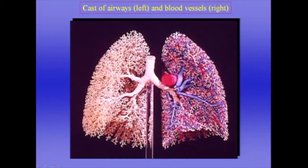Hello and welcome. My name's John West. I want to talk about the blood vessels, and here's a beautiful picture showing a cast of the airways on this side — that's the right lung — and the cast of the blood vessels on this side. The pulmonary artery is shown in red, and the pulmonary veins in blue. You can get a general feeling that the pulmonary blood vessels branch in roughly the same way as the airways do.